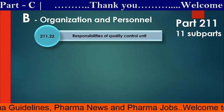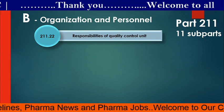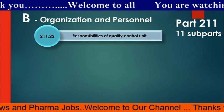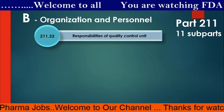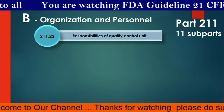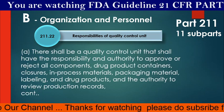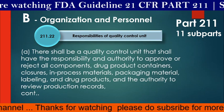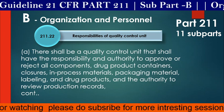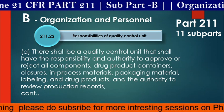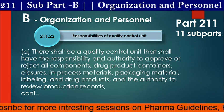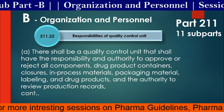Pharmaceutical organizations have departments like Production, Manufacturing, Packing, Formulations, Quality Control, Quality Assurance and Warehouse. Guideline 211.22 talks about Responsibilities of the Quality Control Unit. There shall be a Quality Control Unit that shall have the responsibility and authority to approve or reject all components, drug product containers, closures, in-process materials, packaging material, labeling, and drug products, and the authority to review production records.